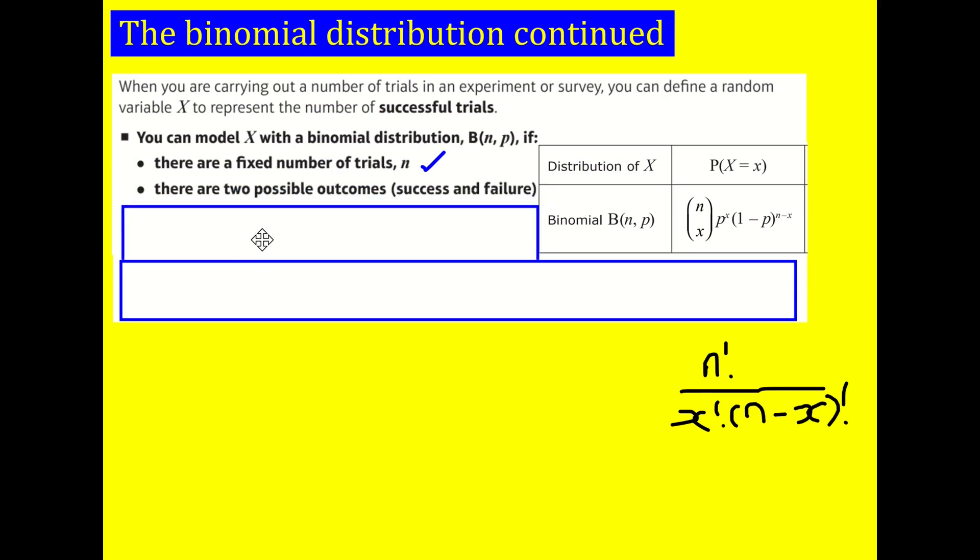Second one, there needs to be two possible outcomes, success and failure. That's kind of written into the binomial distribution. I see this one as, yeah, it's there, but I wouldn't quote it. It's kind of imperative, less important than the other two that I'm about to say.